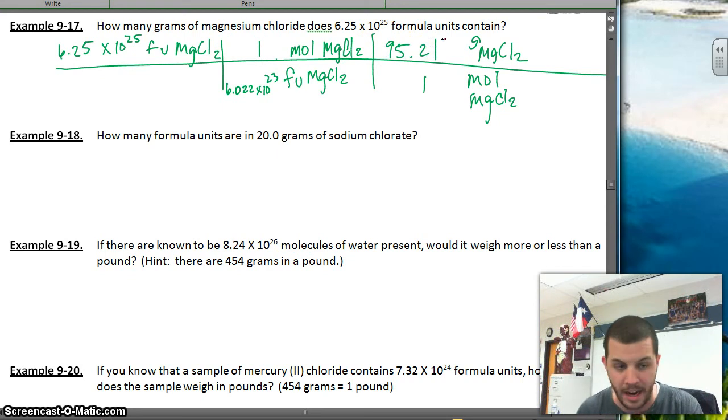So now we just do the math. Okay, so I've got 6.25 E25 times 95.21 enter divided by 6.022 E23. And I get the answer, 9,881.48. Now, of course, that's way too many sig figs. So we need to cut that off at equals 9,880 grams of MgCl2. Okay, that's how you do it, folks. That is what we've got.